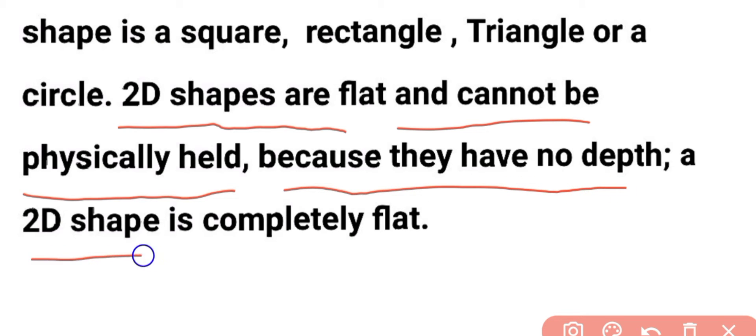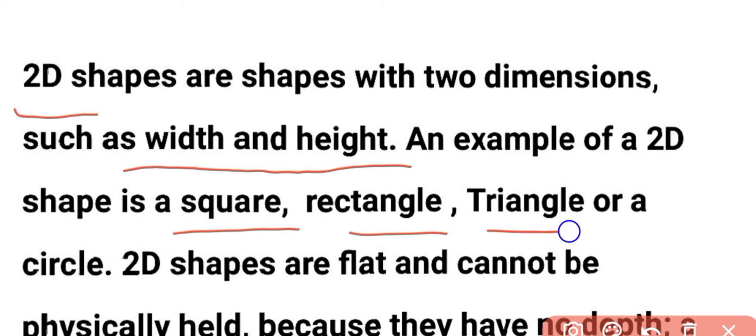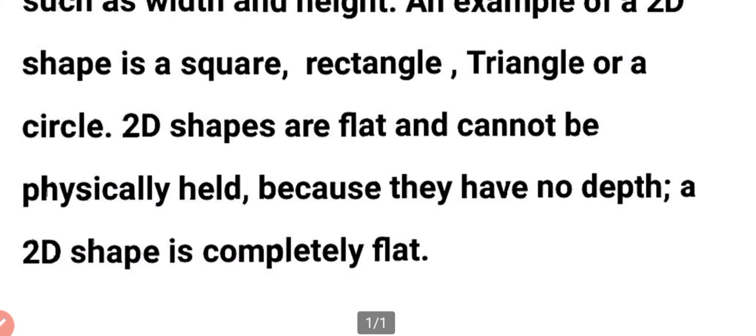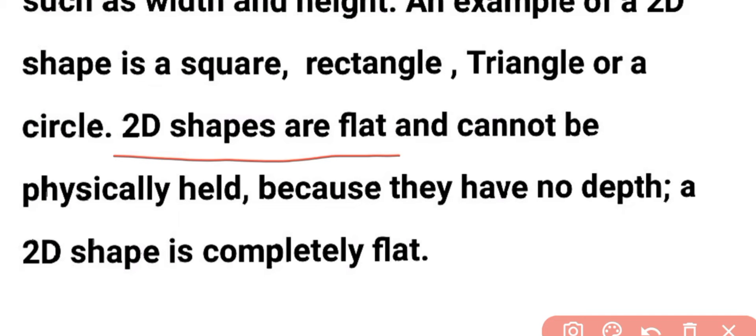A 2D shape is completely flat. It has no height. 2D shapes — examples are square, rectangle, triangle, and circle. 2D shapes are flat; they have no depth. They are completely flat.